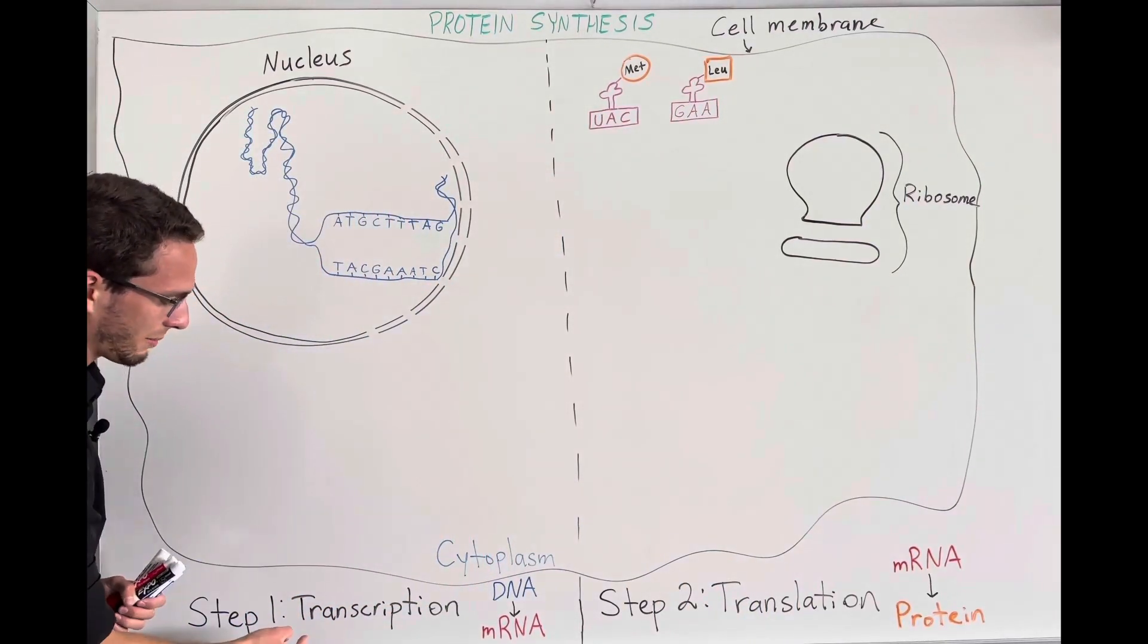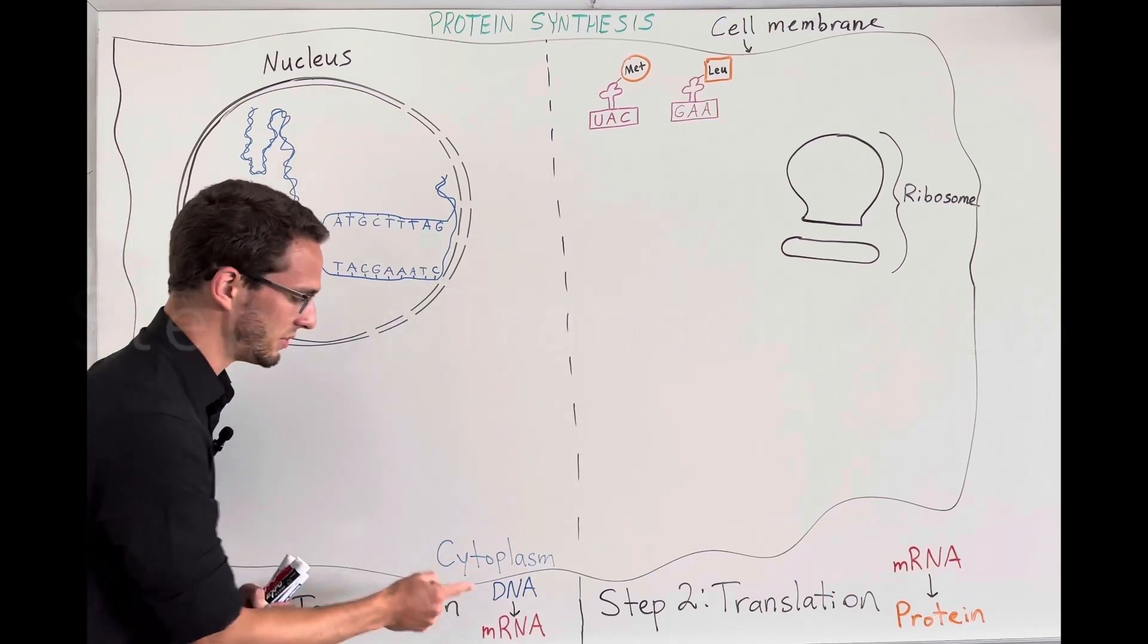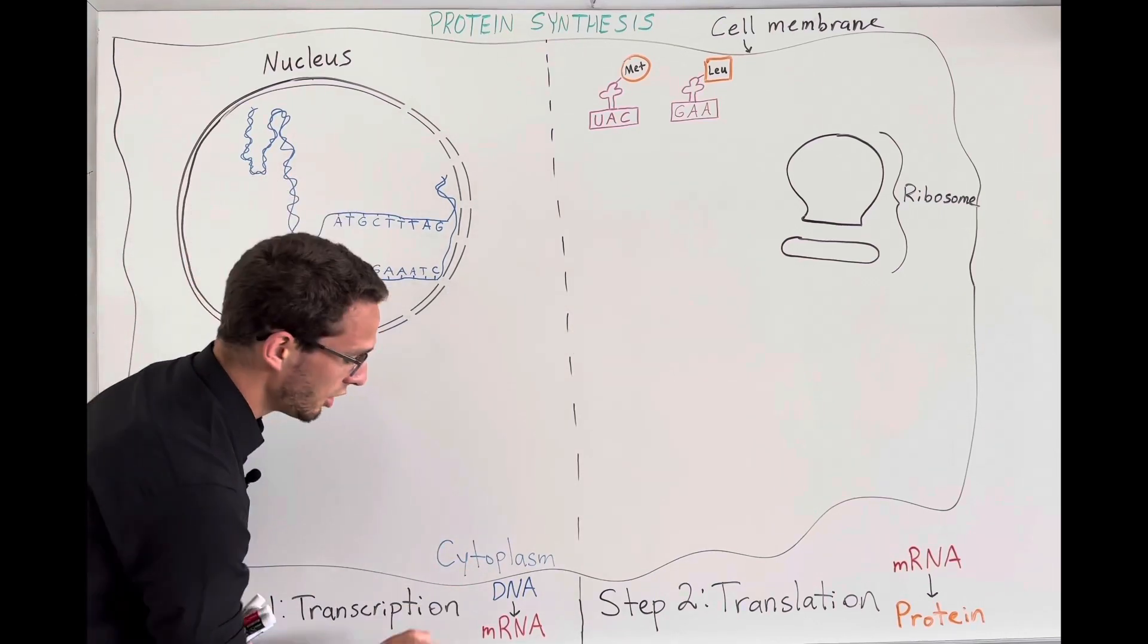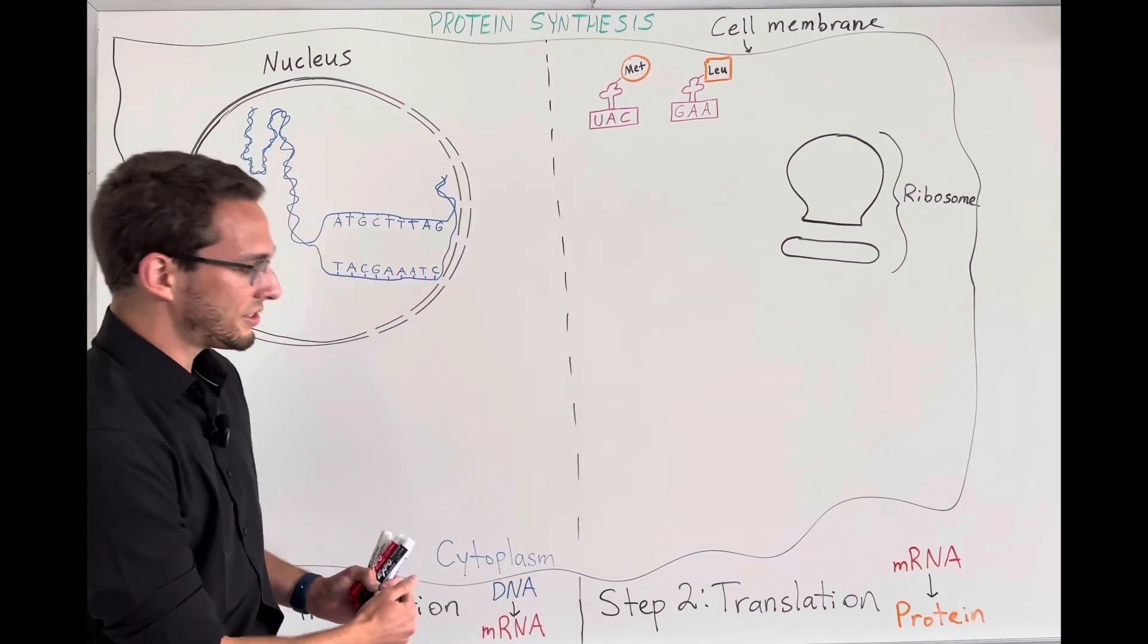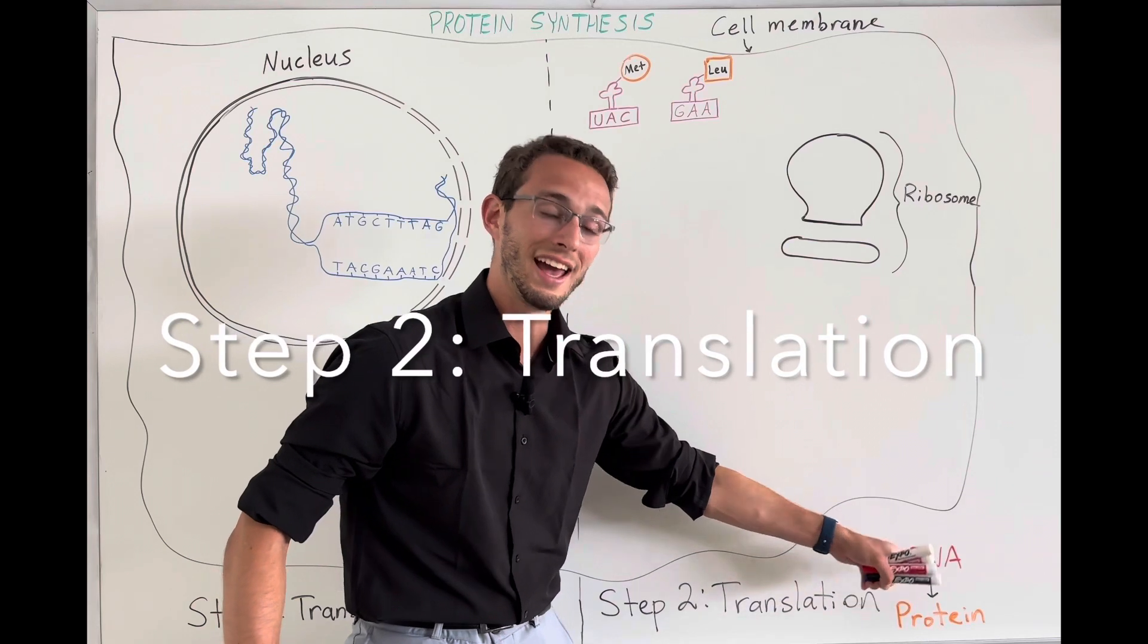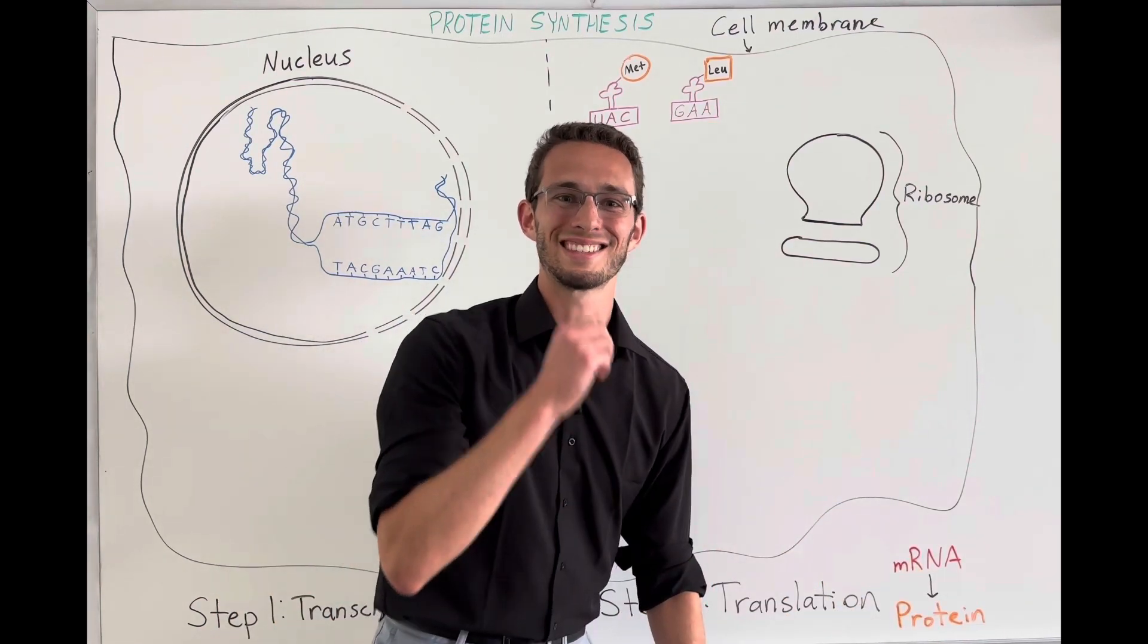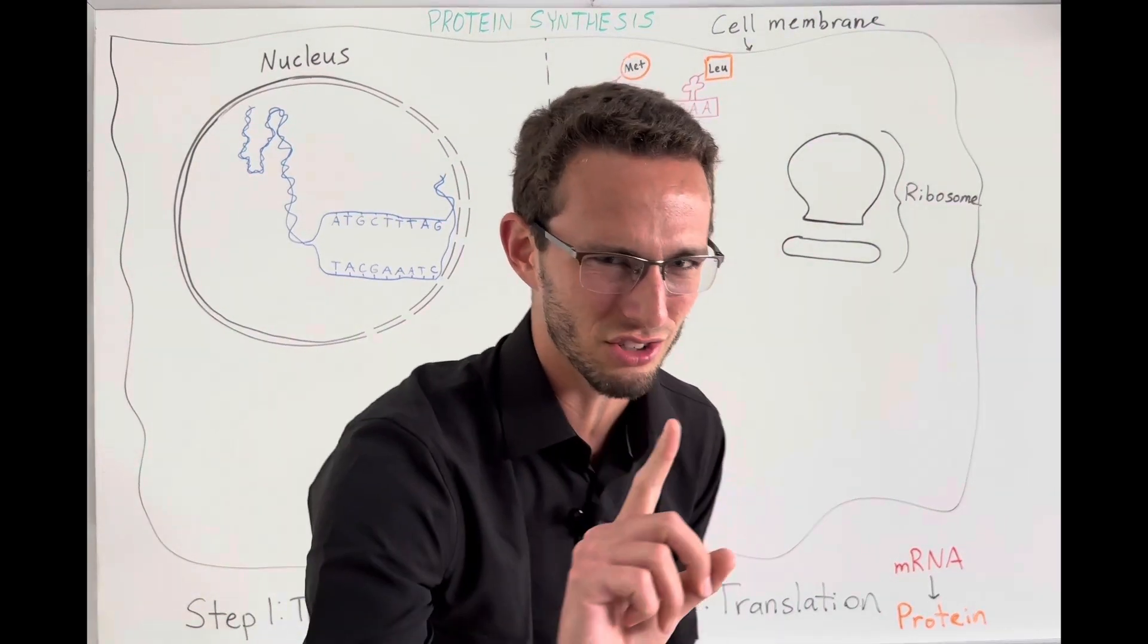So we're going to divide this process up in two main steps. Step number one, we're going to talk about transcription, where we are transcribing information from DNA to mRNA, which is messenger RNA. From there, we'll take it on to step two, which will be translation when we take mRNA and we're translating it into the protein itself, which will give your cells its structure and its function.